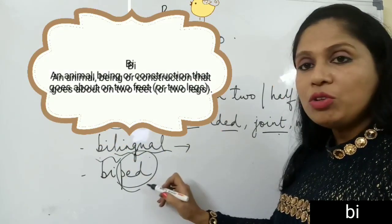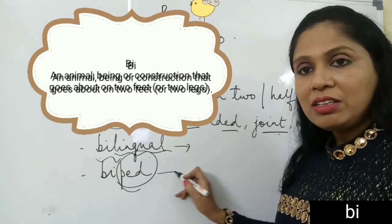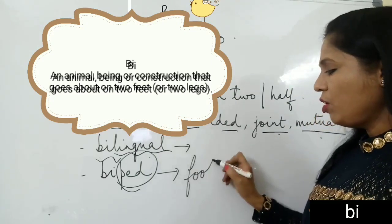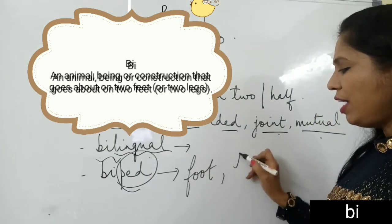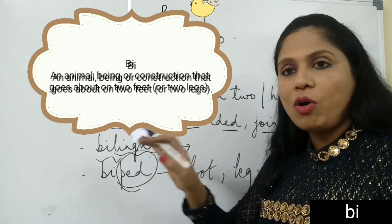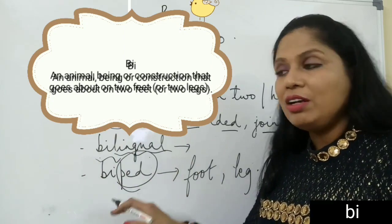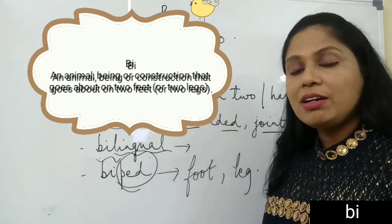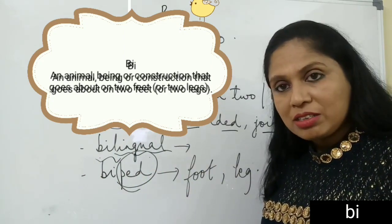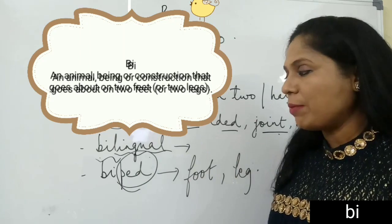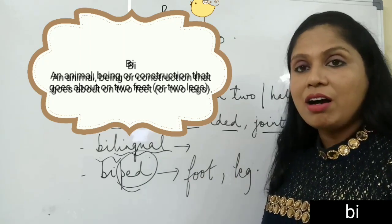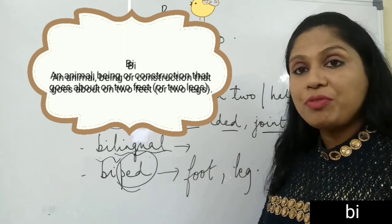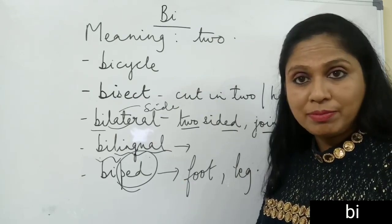The root ped means foot or leg. Something or someone that has got two legs is a biped — for example, human beings are bipeds, and we follow bipedalism.